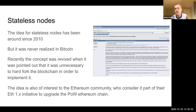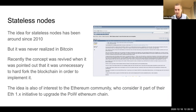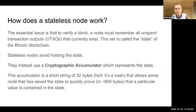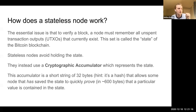This is also of interest to the Ethereum community and their EF 1.X initiative to upgrade the proof-of-work Ethereum main chain. The question is: how do we both check all of the math in the blockchain ledger while not using 300 gigabytes or 17 gigabytes of disk space just to run a Bitcoin node?